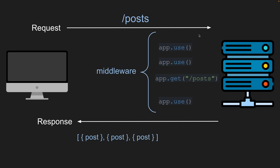Some use cases for middleware are things like logging or request validation. It's super helpful because if a request comes in and in our first piece of middleware we want to validate that the request is formatted exactly how we want it — if it's not formatted correctly, we can just return the response right away and never continue on to the controller. So when we get to the controller, we can know the request is valid and has all the properties we expect.